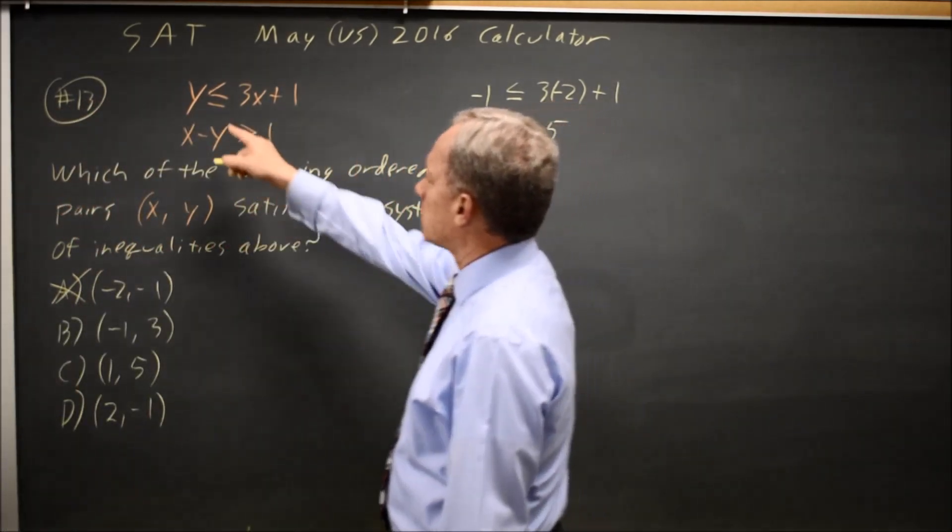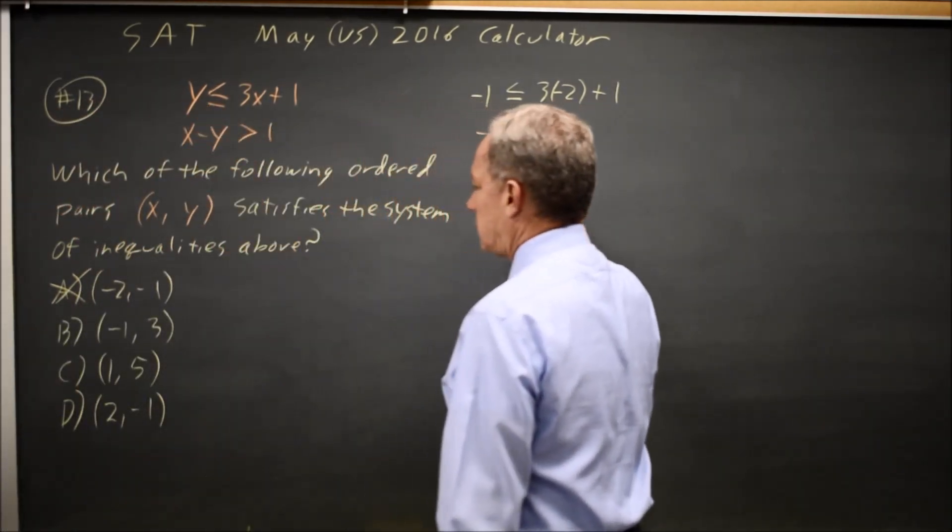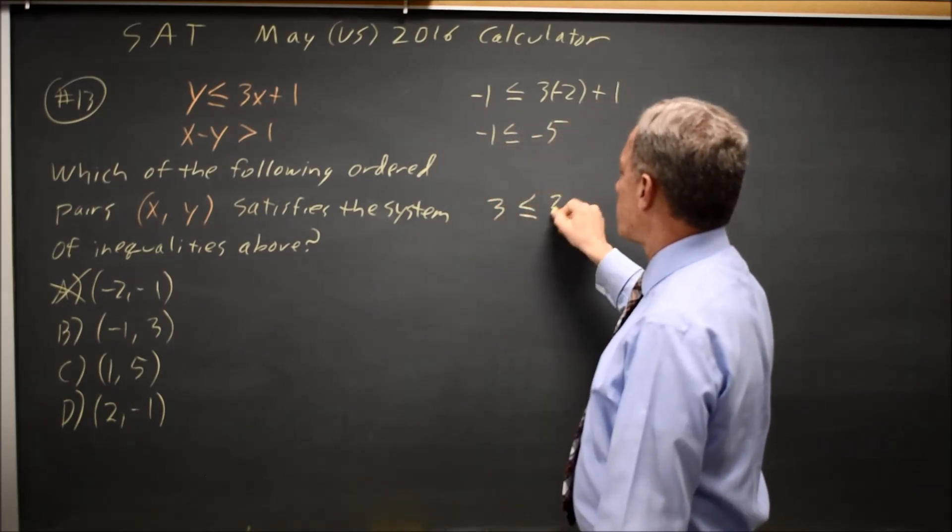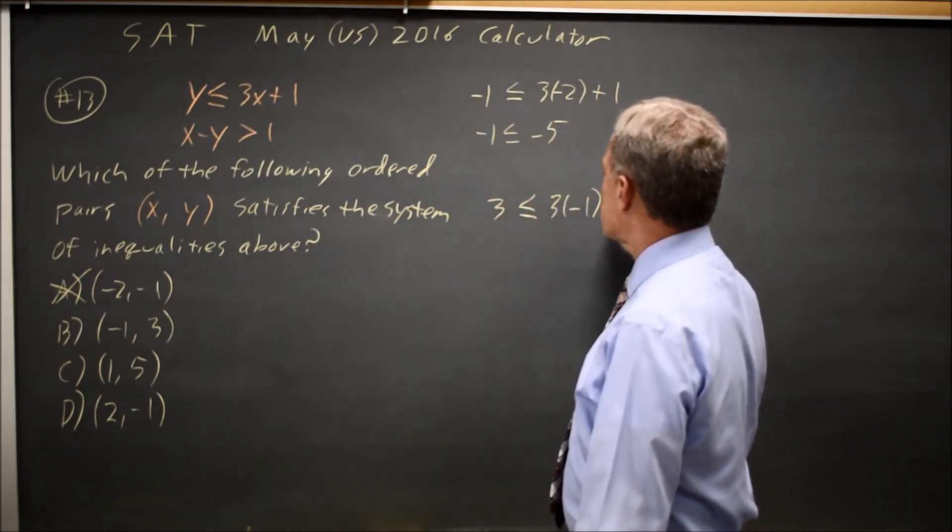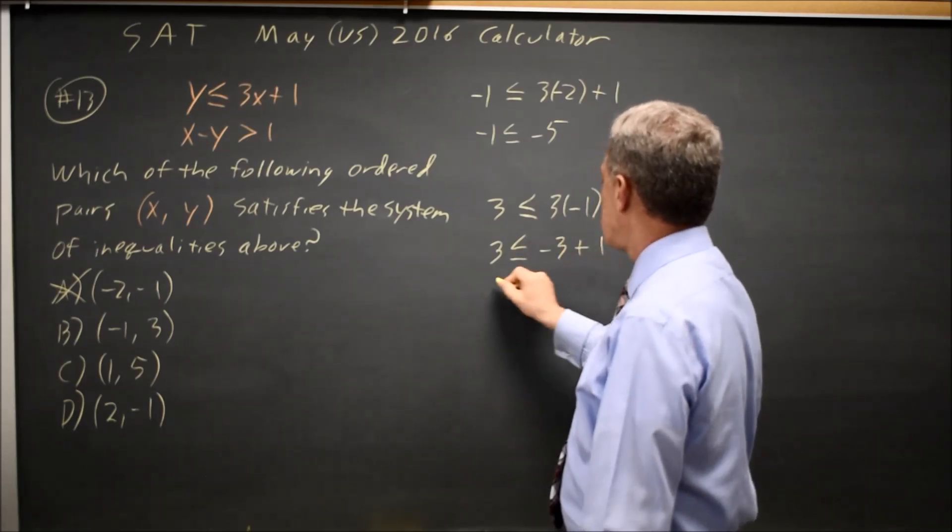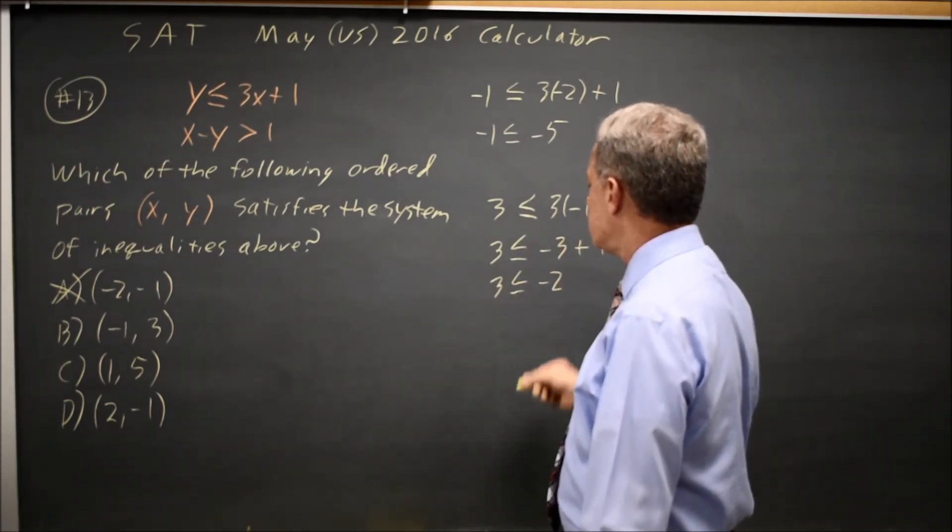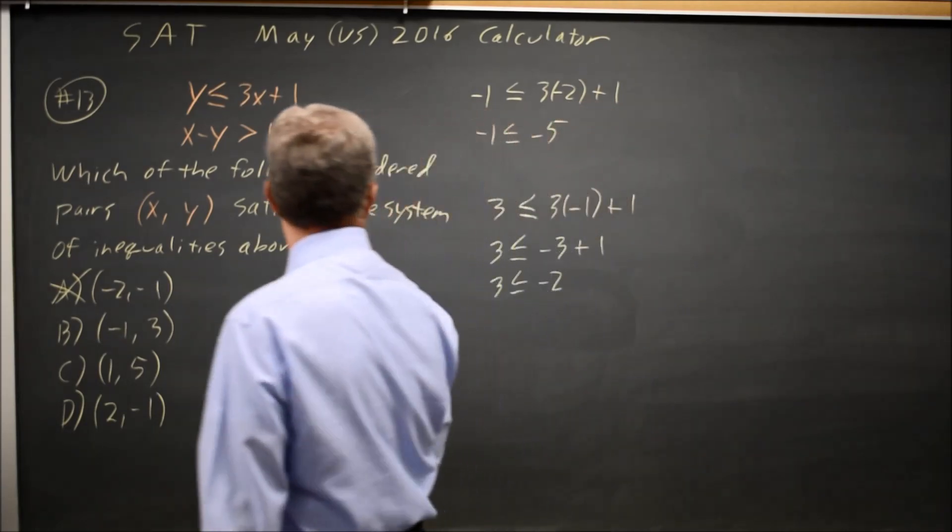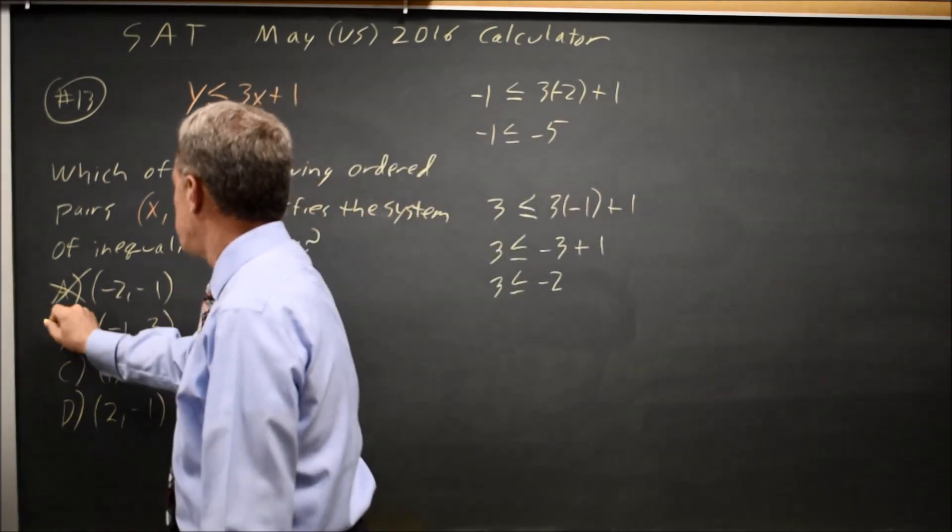How about choice B? The Y value 3 less than or equal to 3 times the X value negative 1 plus 1. Is 3 less than or equal to negative 3 plus 1, 3 less than or equal to negative 2? That's not true. 3 is greater than negative 2, so choice B is wrong.